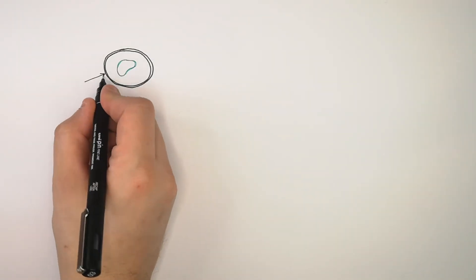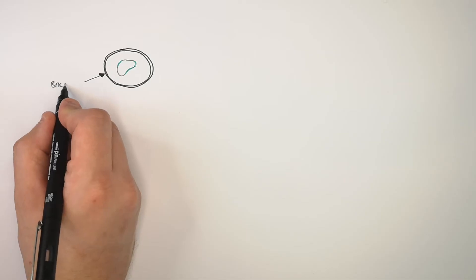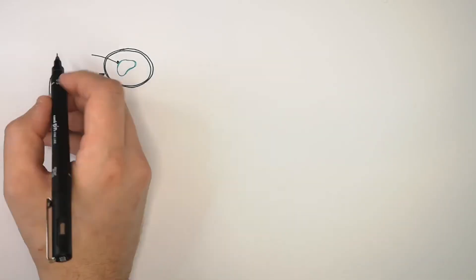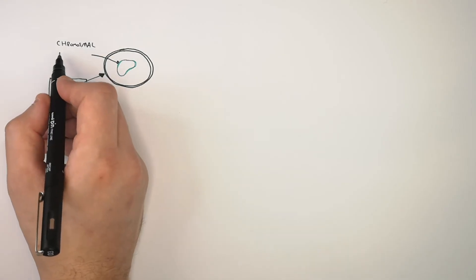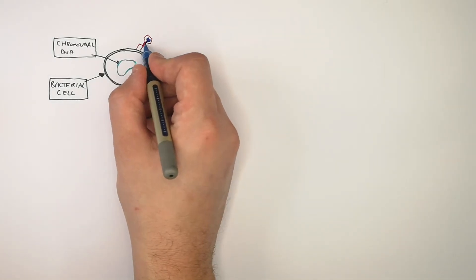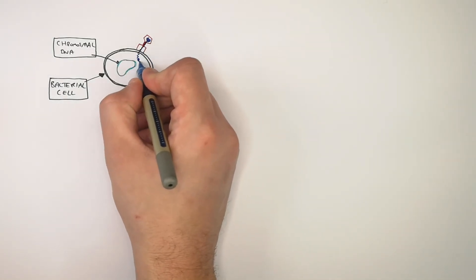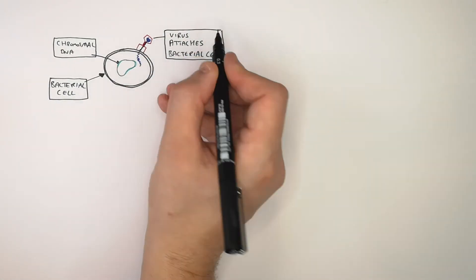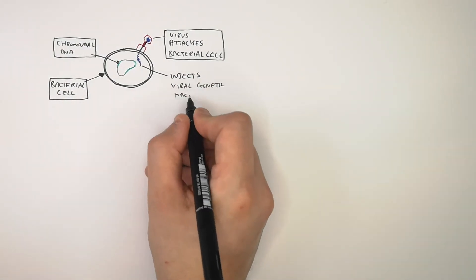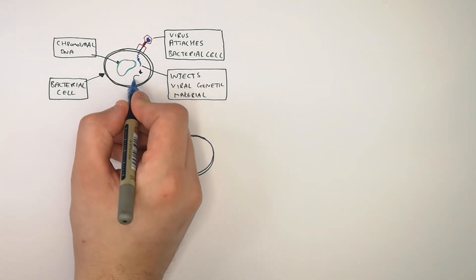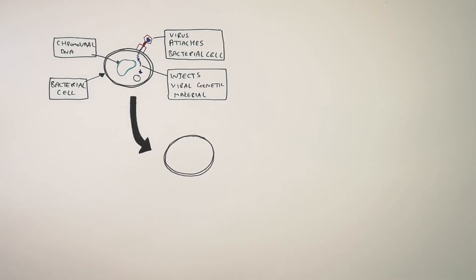This is the lysogenic pathway. The bacterial cell contains chromosomal DNA as its genetic material. The virus attaches onto the bacterial cell and injects its viral genetic material inside the bacteria, which forms a circle of genetic material inside the bacterial cell.